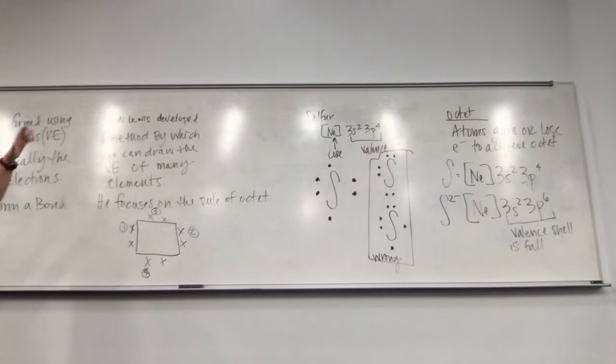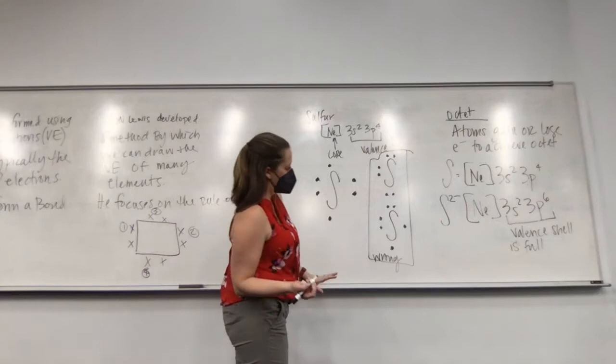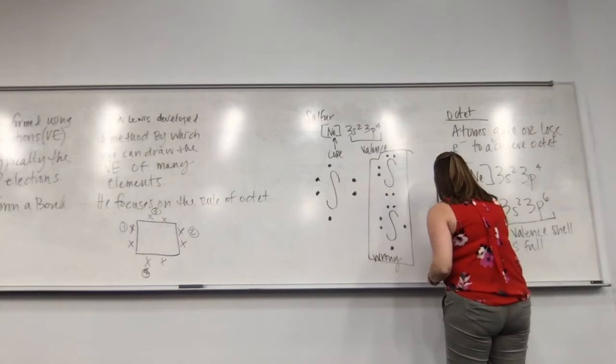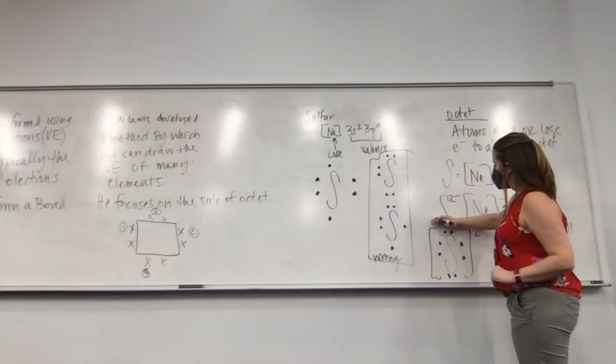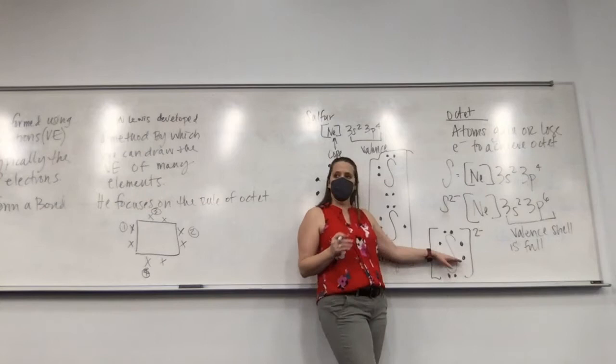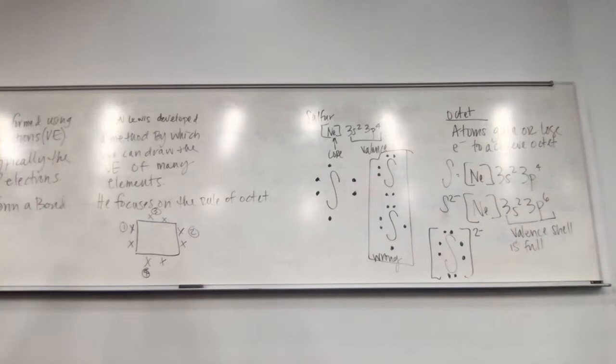We can draw the Lewis dot structure of S²⁻ — it has all eight dots — and you put it in brackets with a 2− charge on the outside. If you wanted to draw the Lewis dot structure of an ion, it would look like this. Any questions about Lewis dot structures so far?